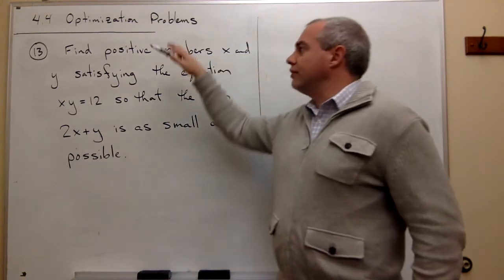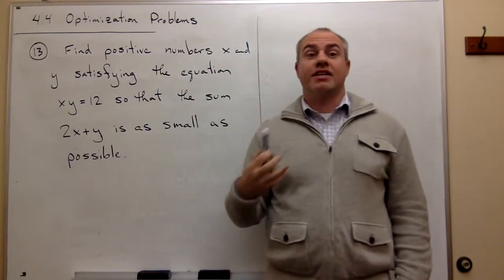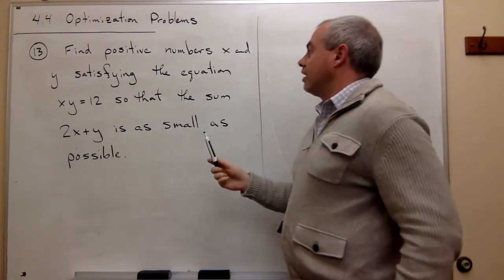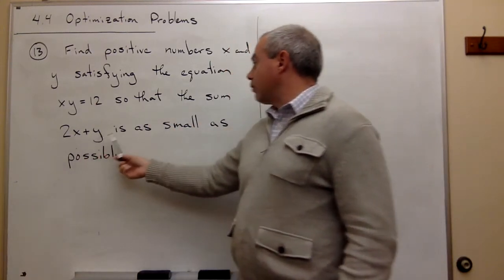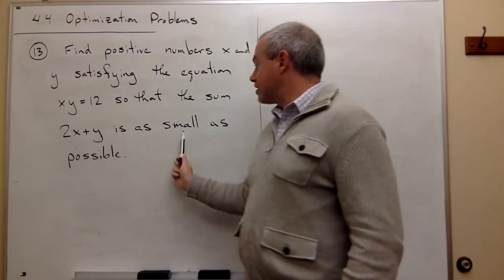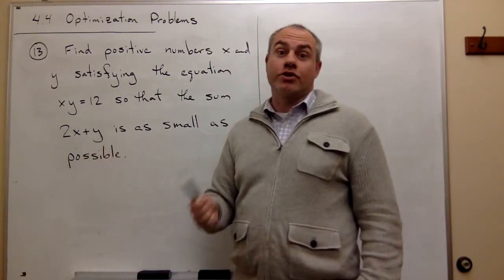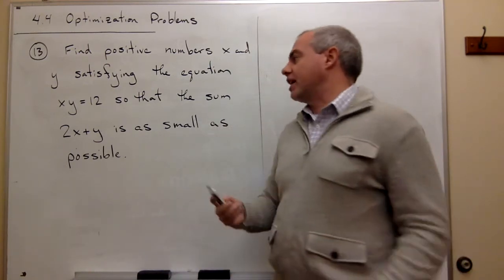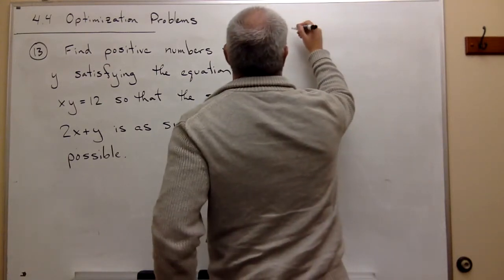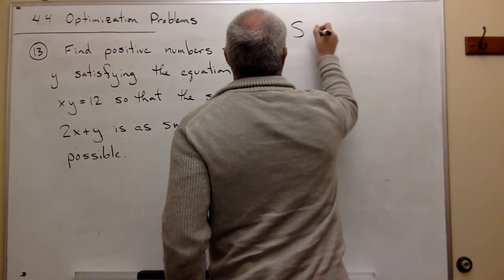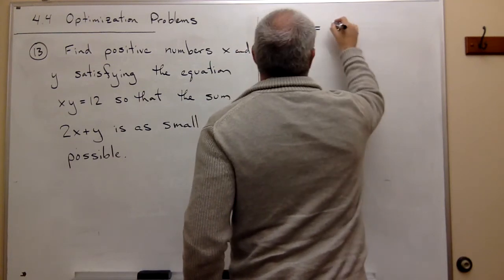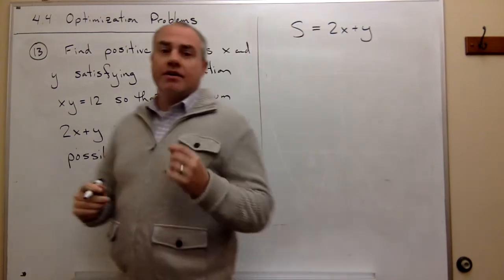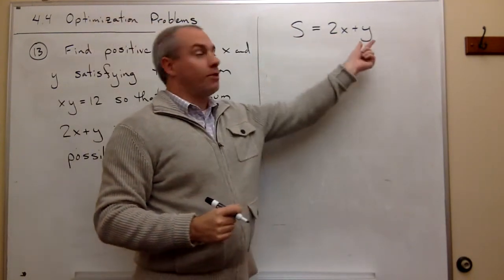And that is: what is it we're trying to make big or small here? So really read through the problem and ask yourself what is it I'm trying to make big or small. And I think if we read this through we see that the sum of 2x + y is as small as possible. So we're trying to make that sum 2x + y as small as we possibly can, so I'm going to call that something, I'm just going to call it S, and S is equal to 2x + y.